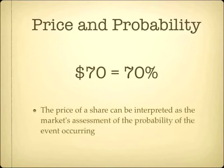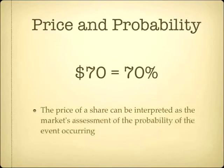Generally, the price of a share can be interpreted as the market's estimation of the probability that that event will occur. So if people are paying $70 for Obama shares, you could take it that the market thinks Obama has a 70% chance of winning.